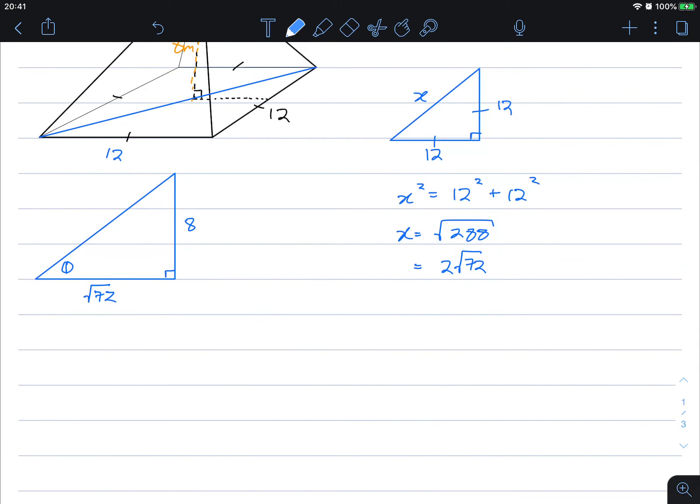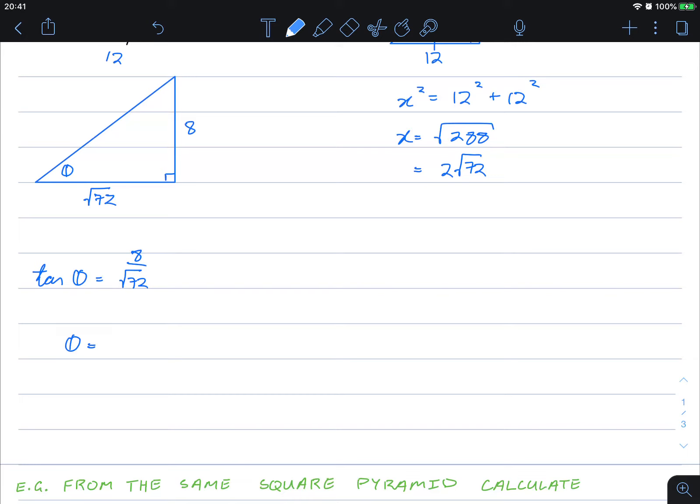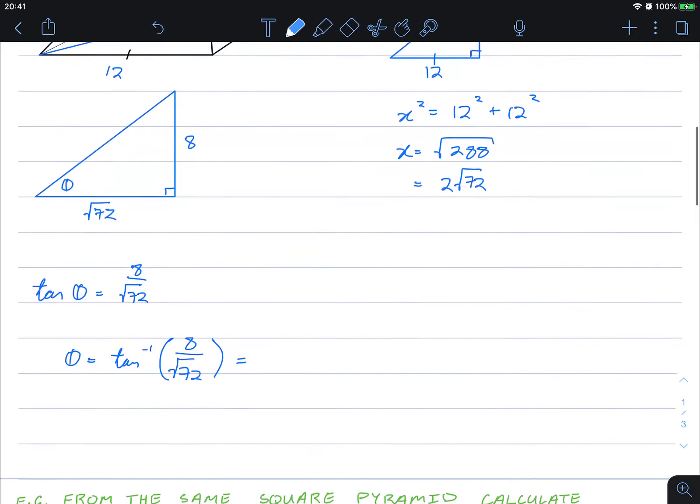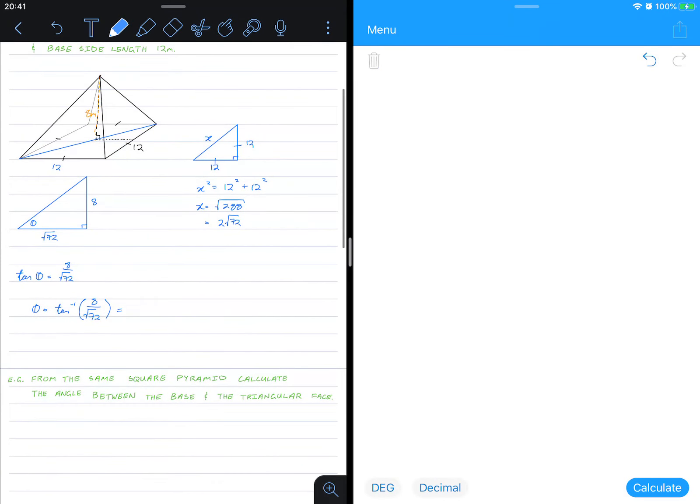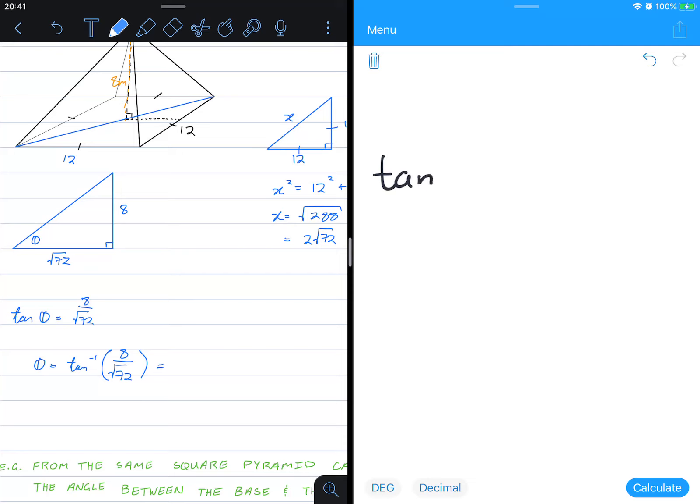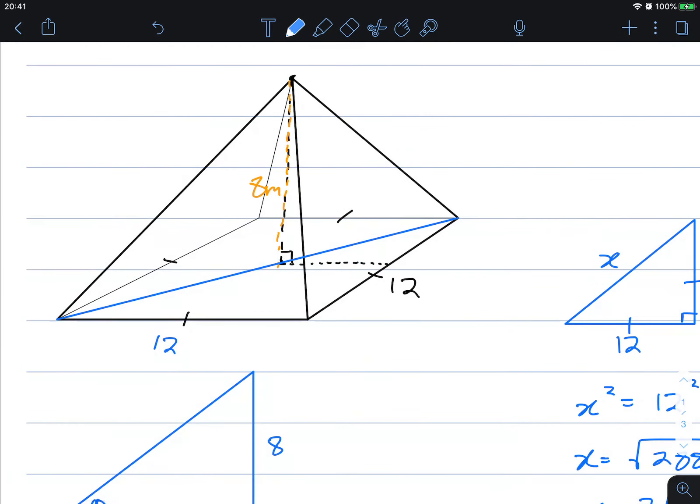Okay, so from here, we can now figure out what that angle is. So tan theta is 8 on root 72. And theta is equal to tan inverse, the inverse tan, 8 on root 72. Let's figure out what this is. Let's do this to the nearest whole degree. Tan inverse 8 on 72 square root. That gives us 43 degrees to the nearest whole degree. Let's keep moving.